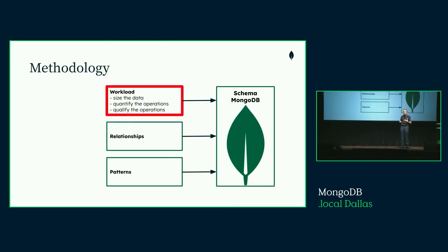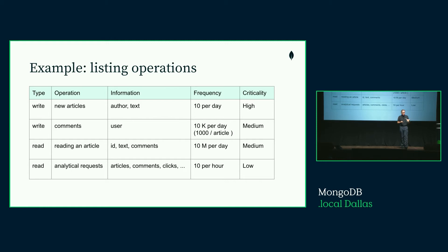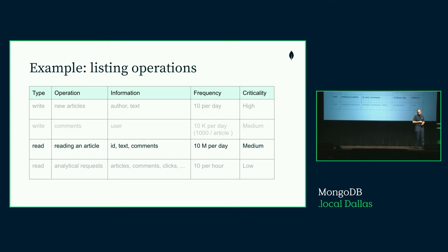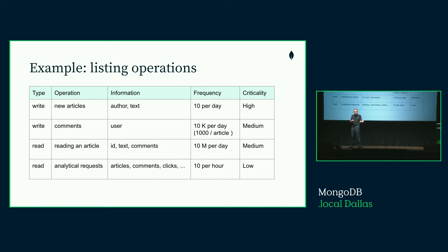In that first phase of defining the workload, we want to size the data, identify the operations that are going to run most often and are most important, quantify them — how often do they run per unit of time — and qualify them. For example, in our chef system, we'll have new articles written by chefs, about 10 per day, and those are extremely important because they're core to the system. Then we'll have comments from users, and users reading from the system — that's really important, we want the user to have a very good experience, articles need to load very quickly.